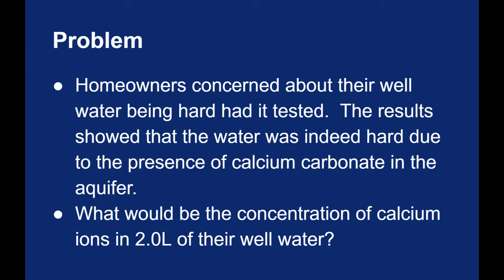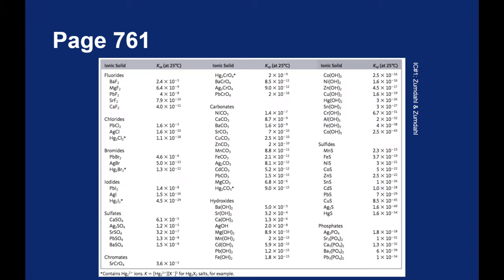As we've done several times before, if we want to know a concentration, we need a Ksp value. For calcium carbonate, the Ksp value is 8.7 times 10 to the negative 9.